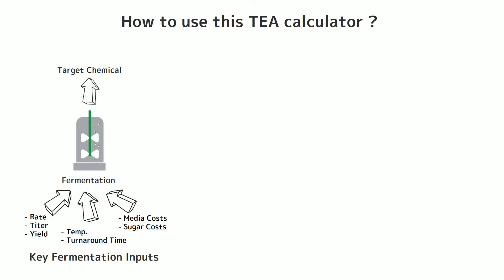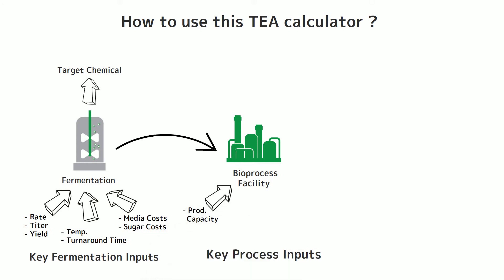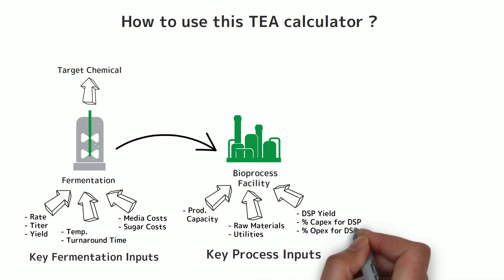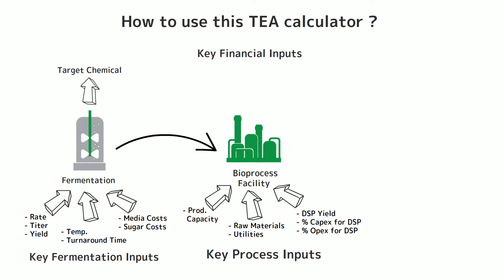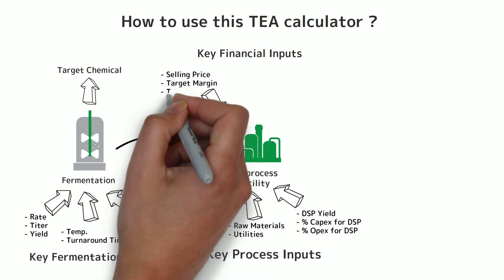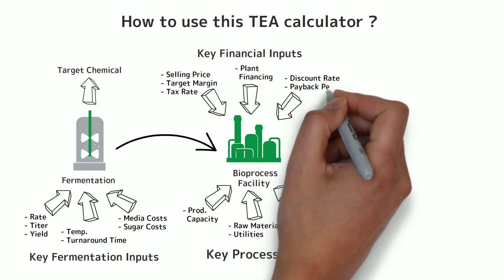This fermentation is part of the larger model bioprocess facility, and the user can also set additional process inputs for the plant, including annual production capacity, the costs of additional raw materials and utilities, as well as estimates for the downstream purification process, including the overall DSP yield, and the percent of the total capital costs and operating costs attributable to the purification. Additionally, the user can set key financial inputs for the plant, including the chemical selling price, the target margin, the tax rate, details on how the plant is financed, as well as an appropriate discount rate and payback period for the project.